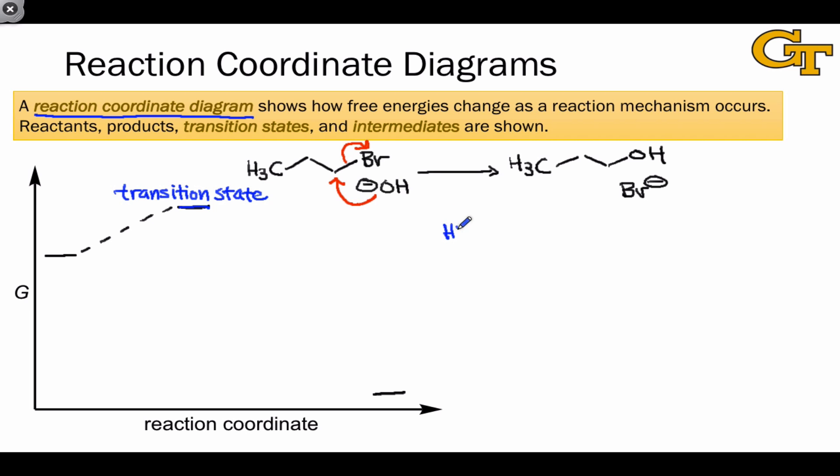We'll talk about this later, so you don't need to worry about it too much for now, but the structure of this transition state looks something like this. A partial bond exists between the hydroxide oxygen and the carbon, and a partial bond exists between that carbon and the bromide as well, with partial negative charges on hydroxide and on bromide.